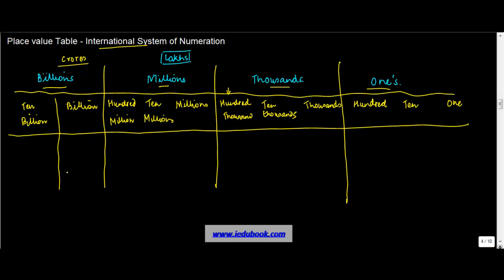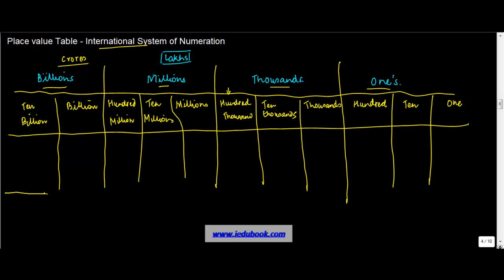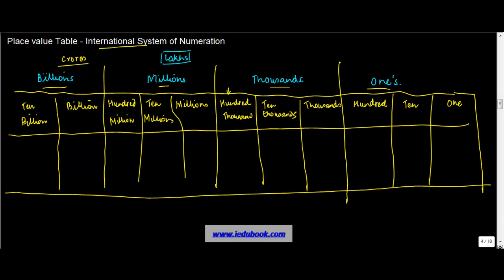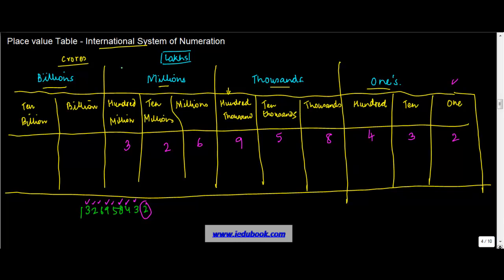So the system is a little different compared to the Hindu-Arabic system. Let's say you were given the number 3 2 6 9 5 8 4 3 2. Just as we saw in the Hindu-Arabic system, you need to move from the extreme right. So you have 2 here, this will go and sit in the ones place, then 3, then 4, 8, 5 — you put them in the columns starting from the right.